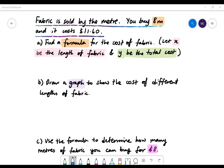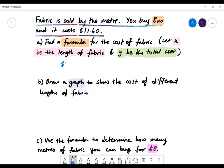Part A: Find a formula for the cost of fabric. Let X be the length of fabric and Y be the total cost. The first thing we need to do is find out how much it costs for 1 metre of fabric. We'll do $11.60 divided by 8 metres, which will give us $1.45. So it costs $1.45 per metre.